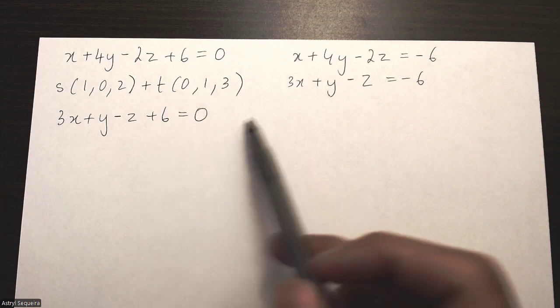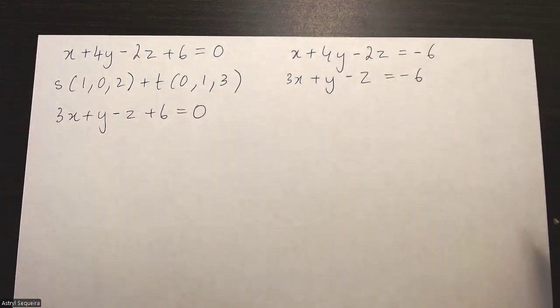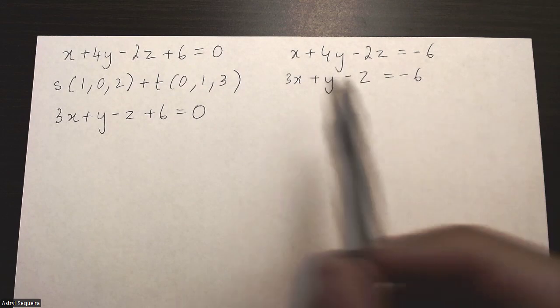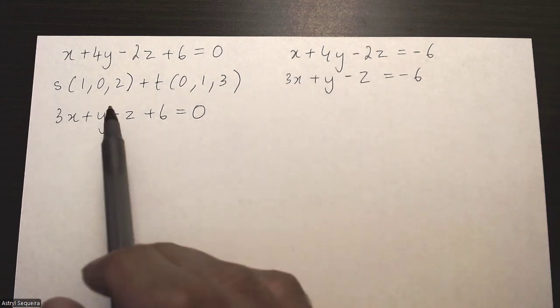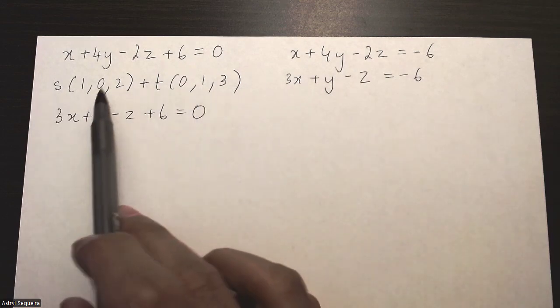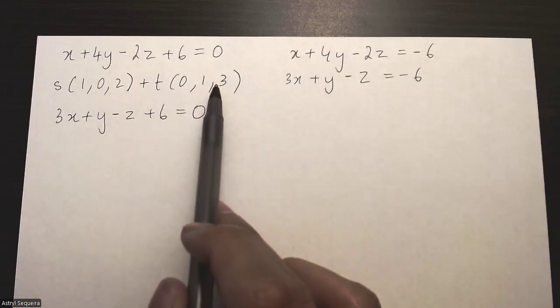I want to get a similar form of this for my second equation here. So I'll start by just cross-multiplying my two direction vectors.